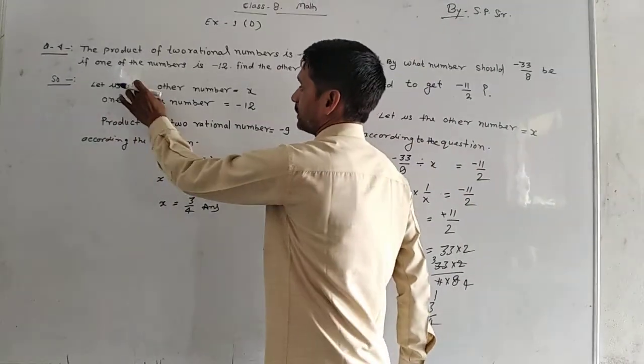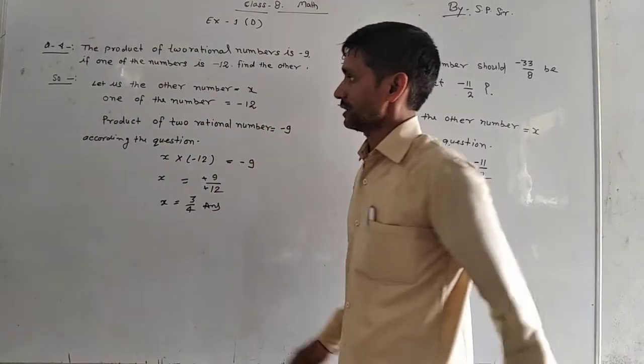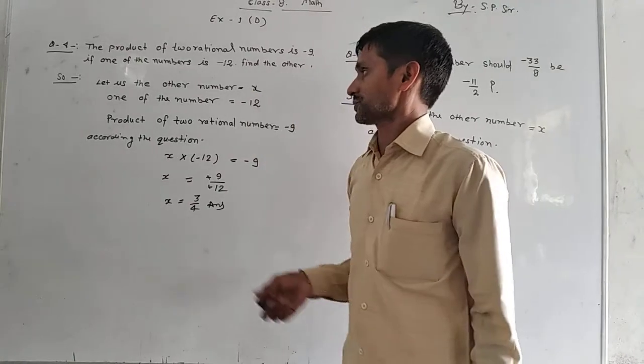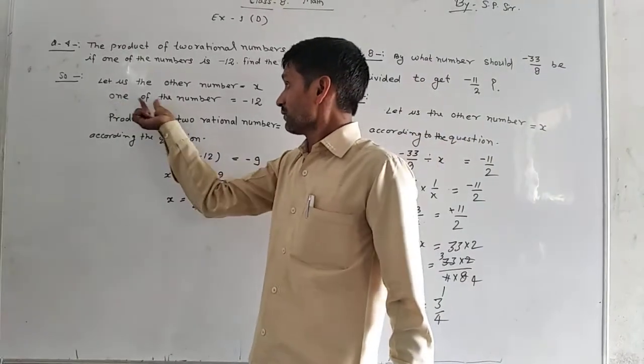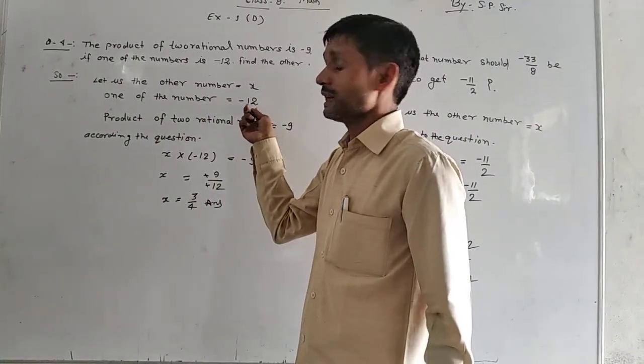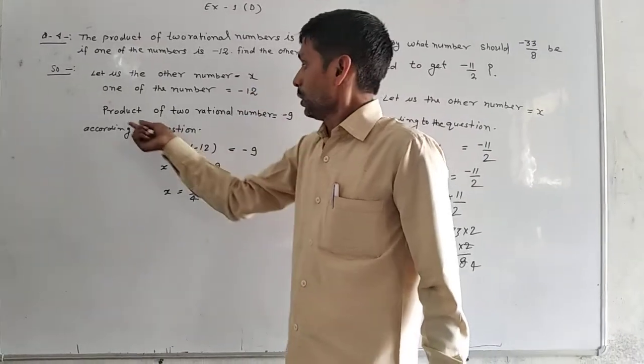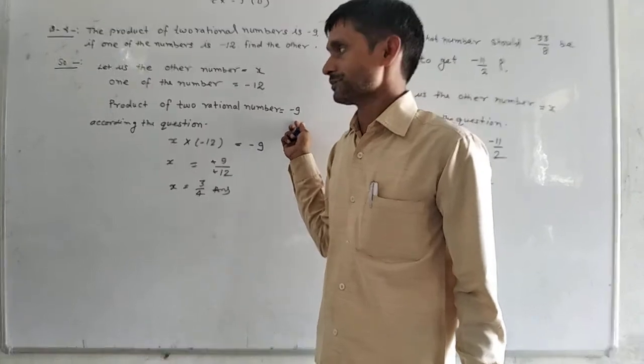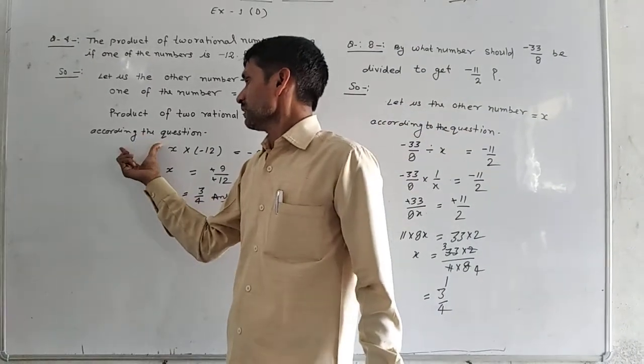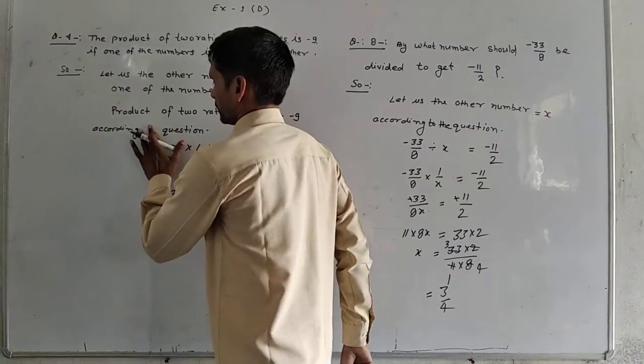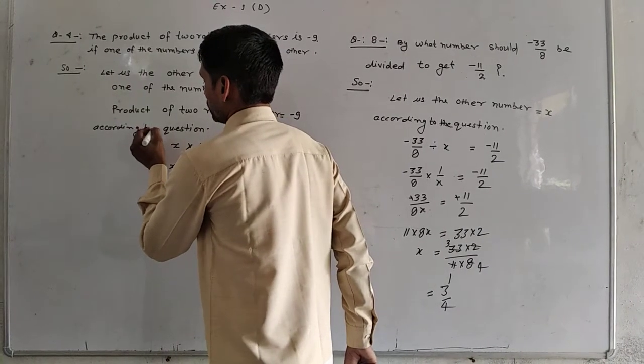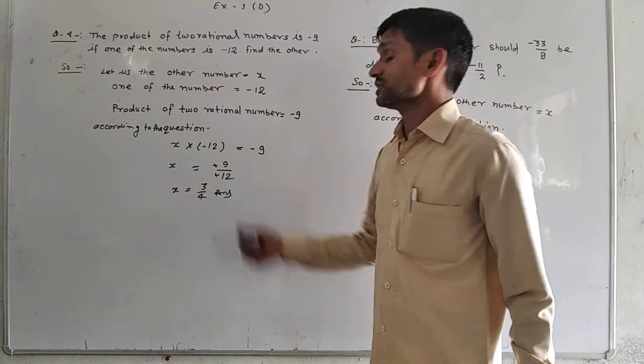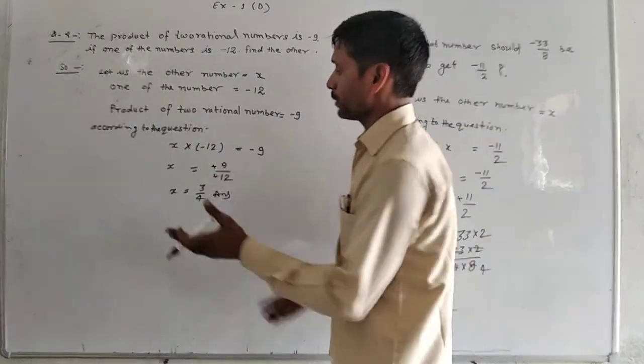Let us look at the other number as X. The product of two rational numbers is minus nine. Now, according to the question, one of the two rational numbers is given.